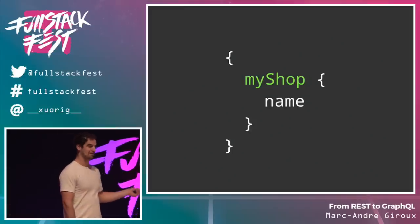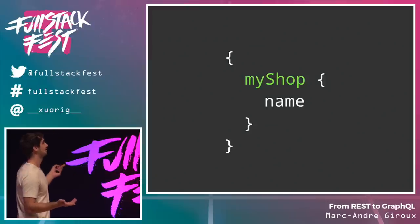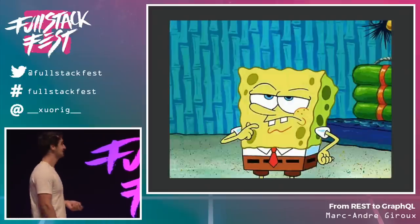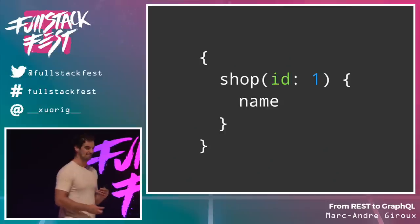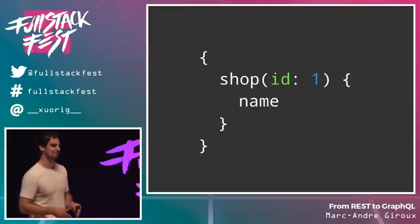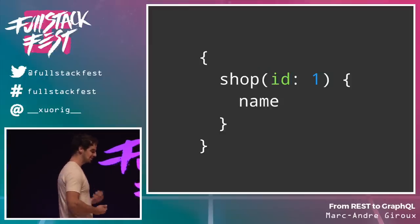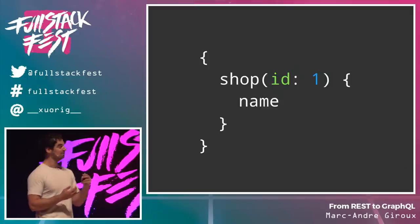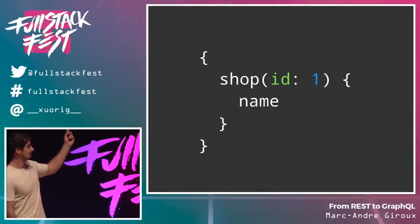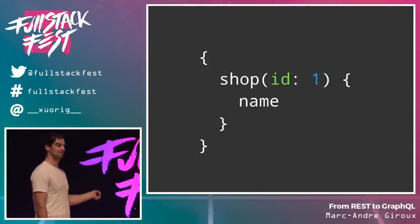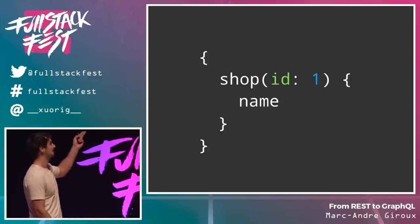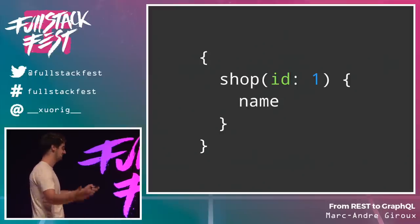Name was obviously a field on my shop. But where does 'my shop' come from? GraphQL models your data as a graph, but it still needs entry points to that graph — you can't just enter from anywhere. So GraphQL has this concept of a query root where you define entry points. We had 'my shop' before, but you might also have a 'shop' entry point that takes an ID and returns the same result. My shop maybe just returns the shop you're logged in as.